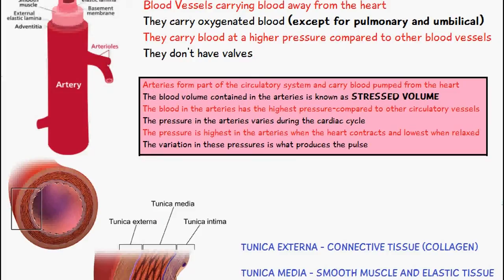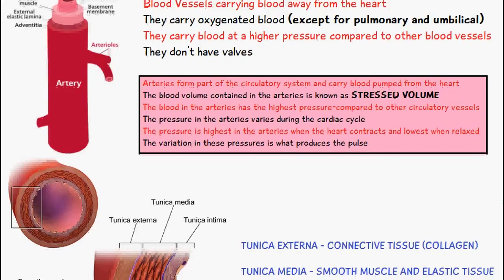When the heart contracts, the pressure is going to be high in the arteries, and when the heart relaxes, the pressure will be lower. This difference between these two pressures is what produces the pulse. If you're palpating or trying to feel the pulse, the common place is to supinate your hand — turn it upward facing the sky. On the left side of the wrist, if you press gently with a finger, you should be able to feel the pulse from the radial artery.